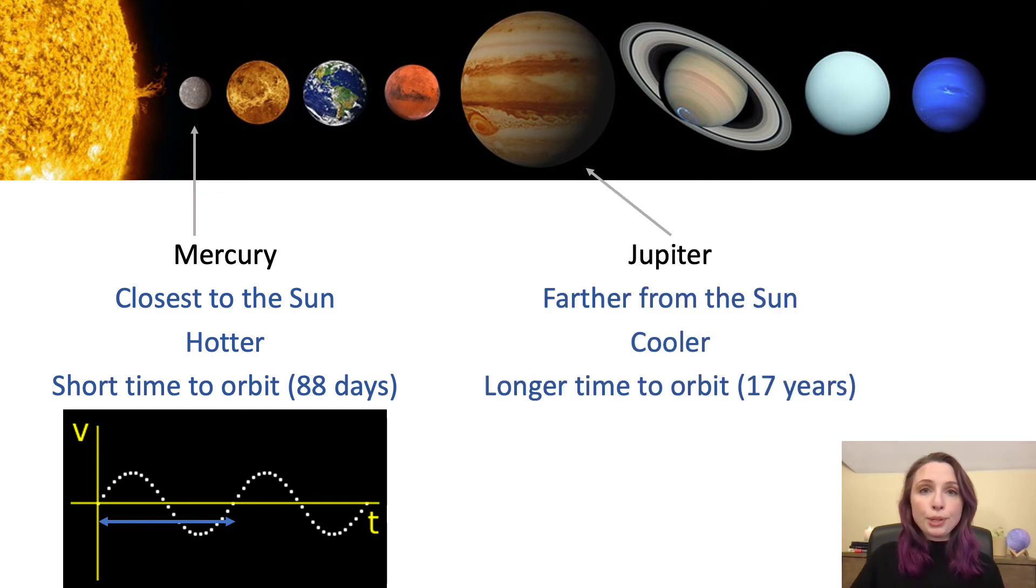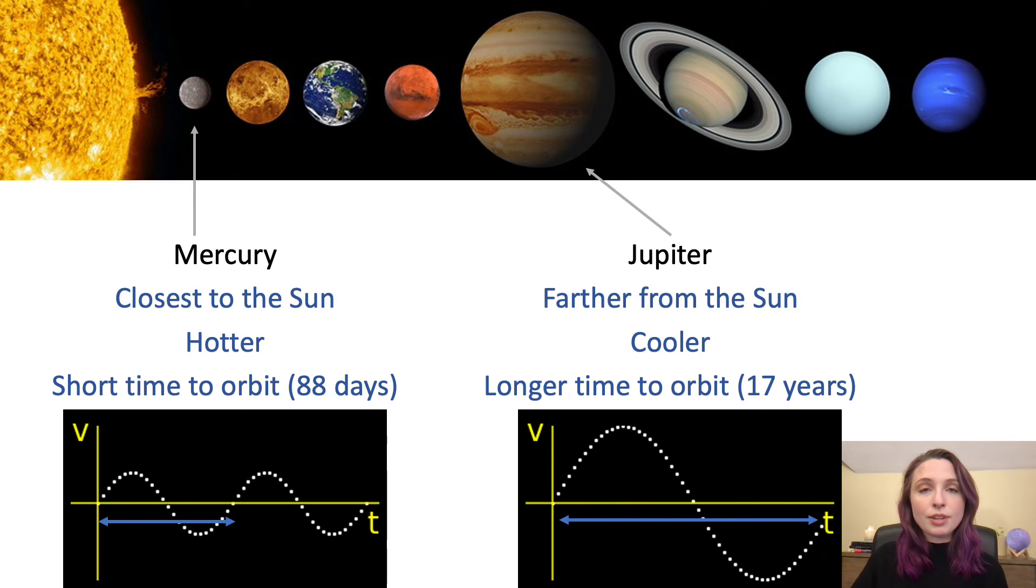Now if we look at Jupiter, Jupiter is a lot further from the sun, which means that it's a lot cooler, because it's not getting as much heat from the sun. We also know that Jupiter takes a lot longer to orbit around the sun. It goes around once every 17 years. If we were to look at a graph of the movement of the sun caused by Jupiter, it would look something like this. Notice that the blue arrow on Jupiter's graph is a lot longer than the blue arrow on Mercury's graph.